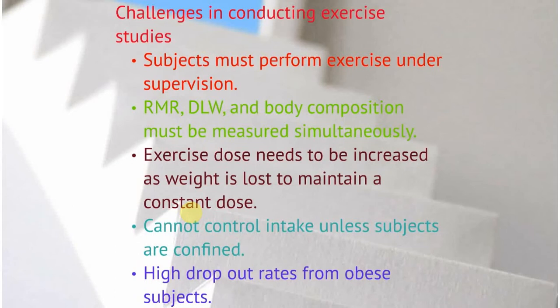Exercise dose also needs to be increased. If you want to burn 300 calories a day, once their body weight goes down, they have to run longer to achieve that 300 calories per day. In free-living individuals, you cannot control intake. That's difficult to do unless the subjects are confined, and there's only one study where subjects were confined in exercise and intake was controlled. As Klaus Westerterp would say, there's a high dropout from obese subjects. Obviously there's something difficult about exercising as your body weight goes up because you have to work a lot harder.